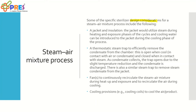A few more controls and design considerations on SAM. Jacket insulation: the jacket utilizes steam during the heating and exposure phase of the cycle, and cooling water can be introduced to the jacket during the cooling phase. Thermostatic steam trap: to efficiently remove condensate from the chamber — it is open when cool and closed when in contact with steam; the condensate is collected, the trap opens due to slight temperature reductions, and condensate is discharged from the chamber. A similar steam trap removes condensate from the jacket as well. The fan continuously recirculates the steam and air mixture during heat up and exposure, and recirculates air during cooling. Cooling provisions such as cooling coils are available to cool the air and the product.